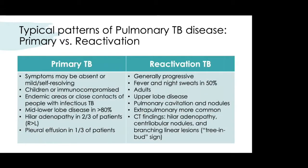In primary TB, symptoms may be mild or even absent. It's more likely in children, in endemic areas, or in close contacts of infectious TB cases. Imaging shows mid-to-lower lobe involvement more than 80% of the time. Hilar adenopathy is common, seen in about two-thirds of cases with right greater than left, and pleural effusion is also common in up to 33% of patients.